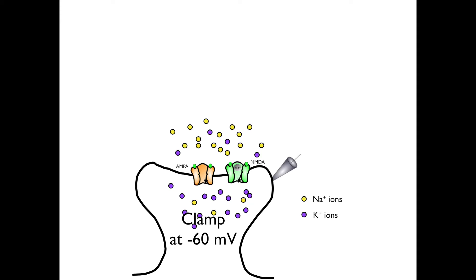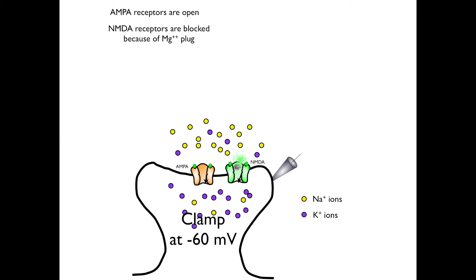Let's add sodium and potassium ions to both the extracellular and intracellular fluids. The sodium ions are shown as yellow balls and are concentrated in the extracellular fluid, while the potassium ions are shown as purple balls and are more concentrated in the intracellular fluid. The AMPA receptors are open and thus ions can pass through their pores. The gates on the NMDA receptors are also open, but their pores are not conducting because the pore is blocked by a magnesium ion, shown as the gray ball.